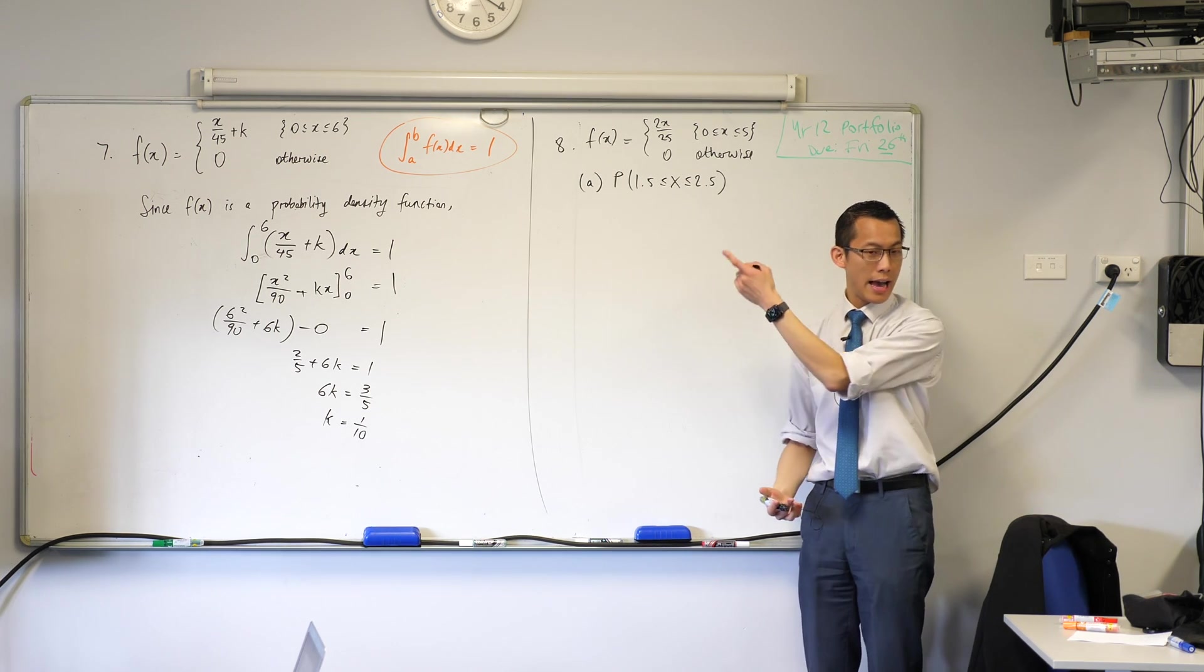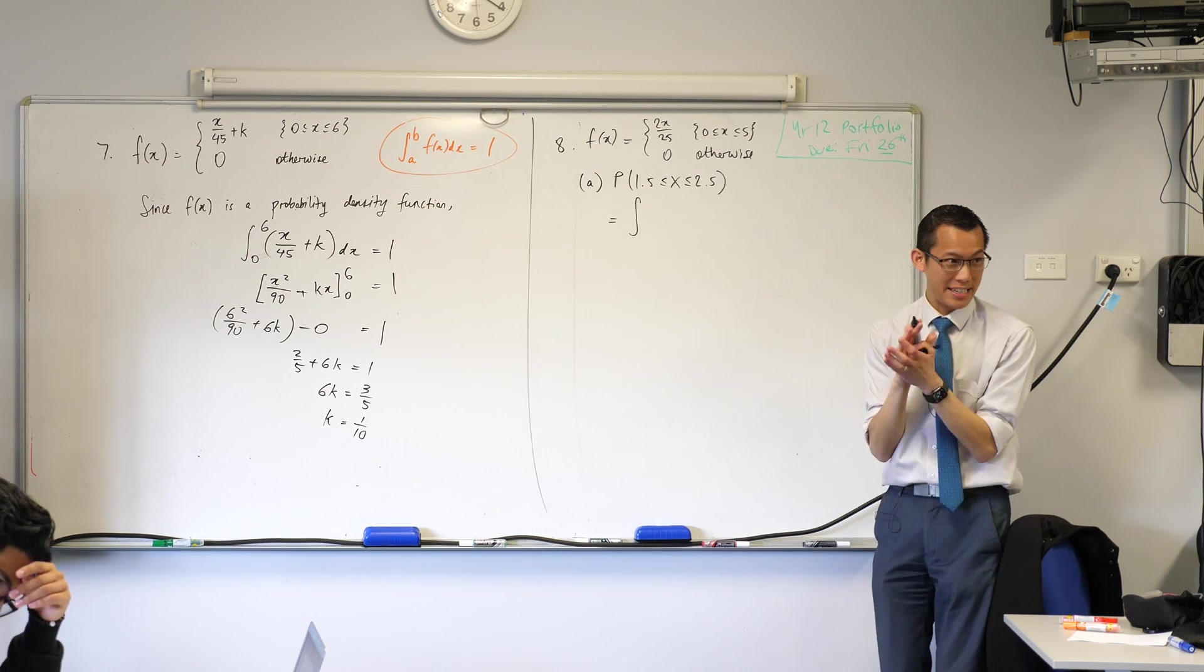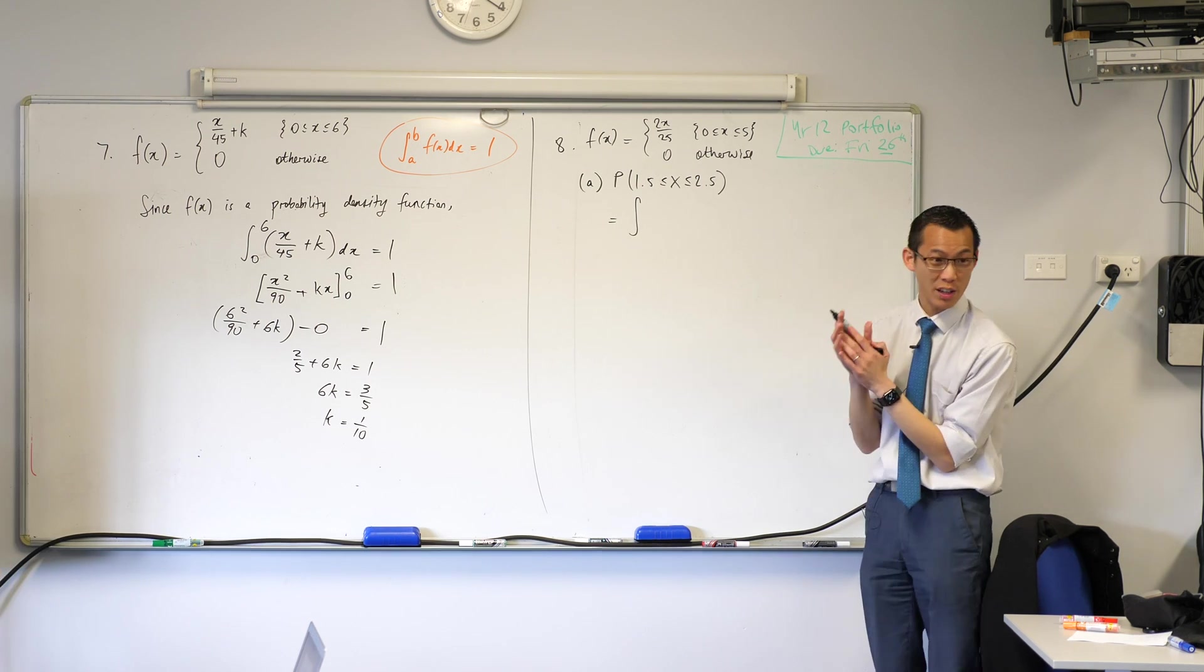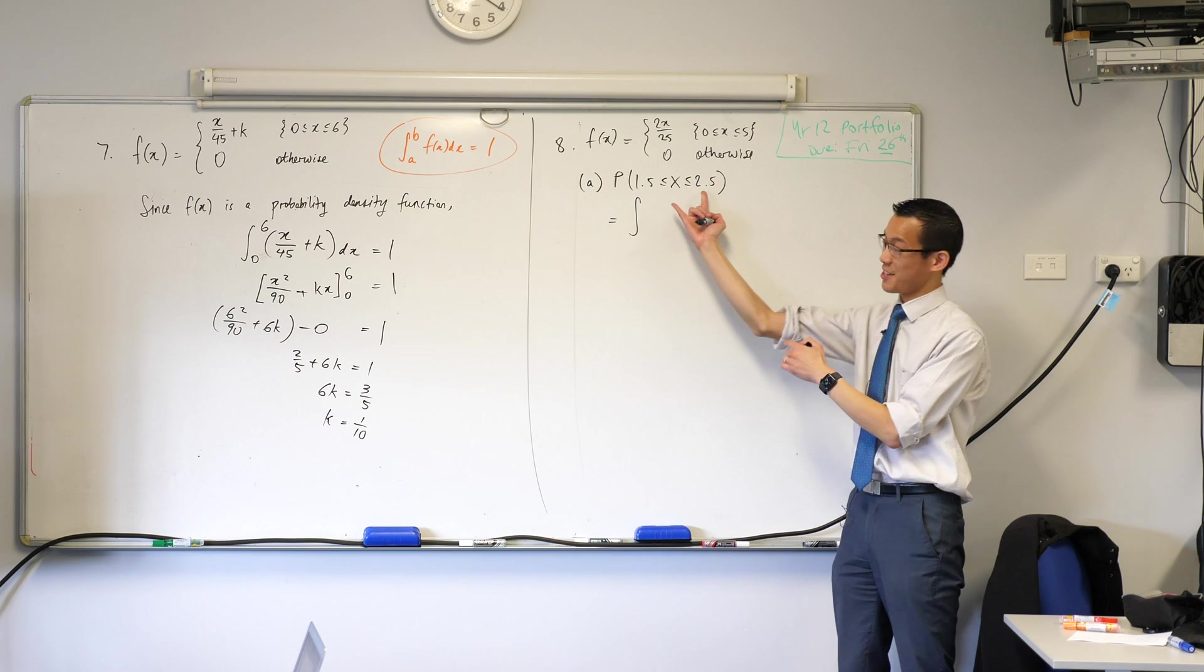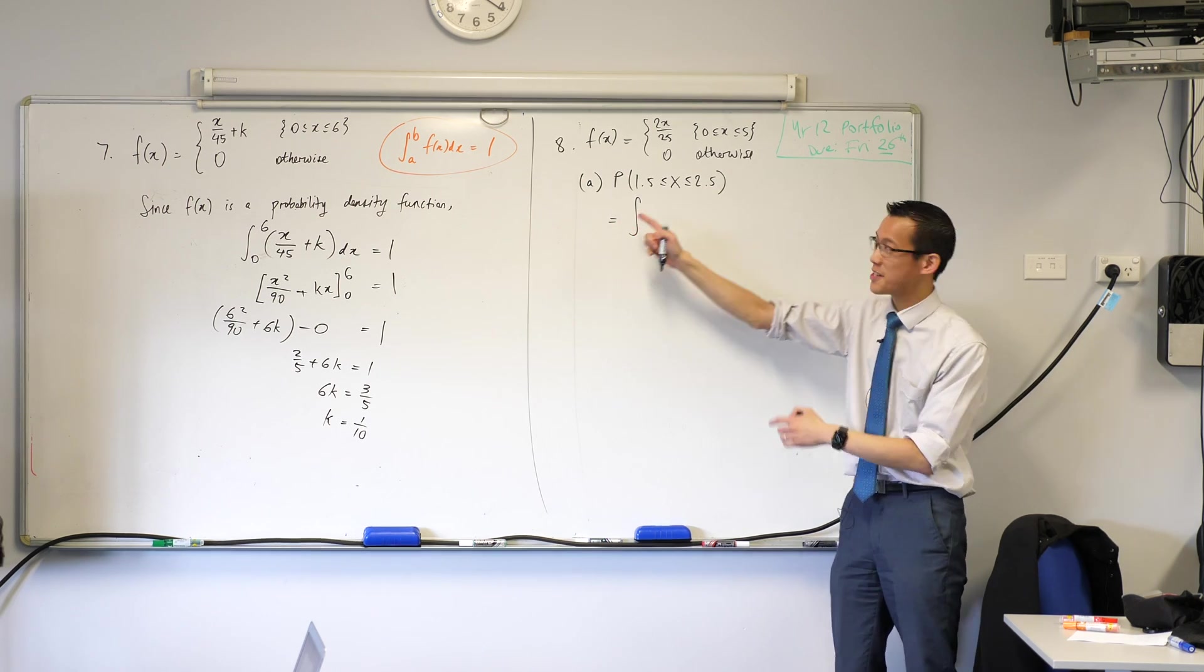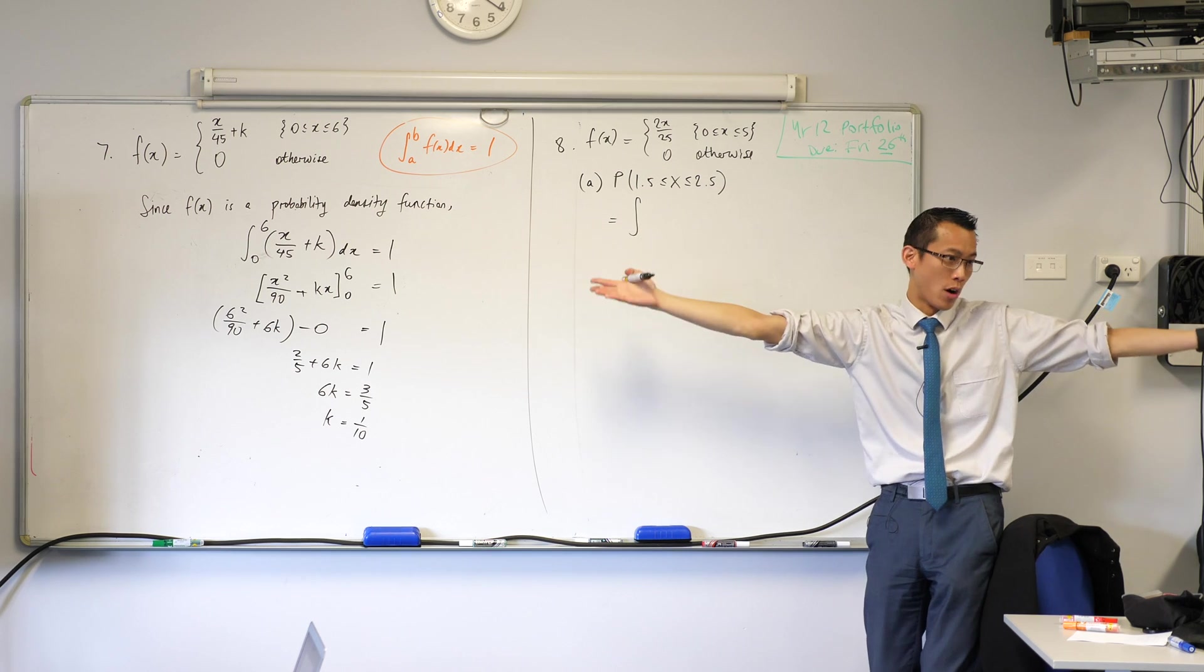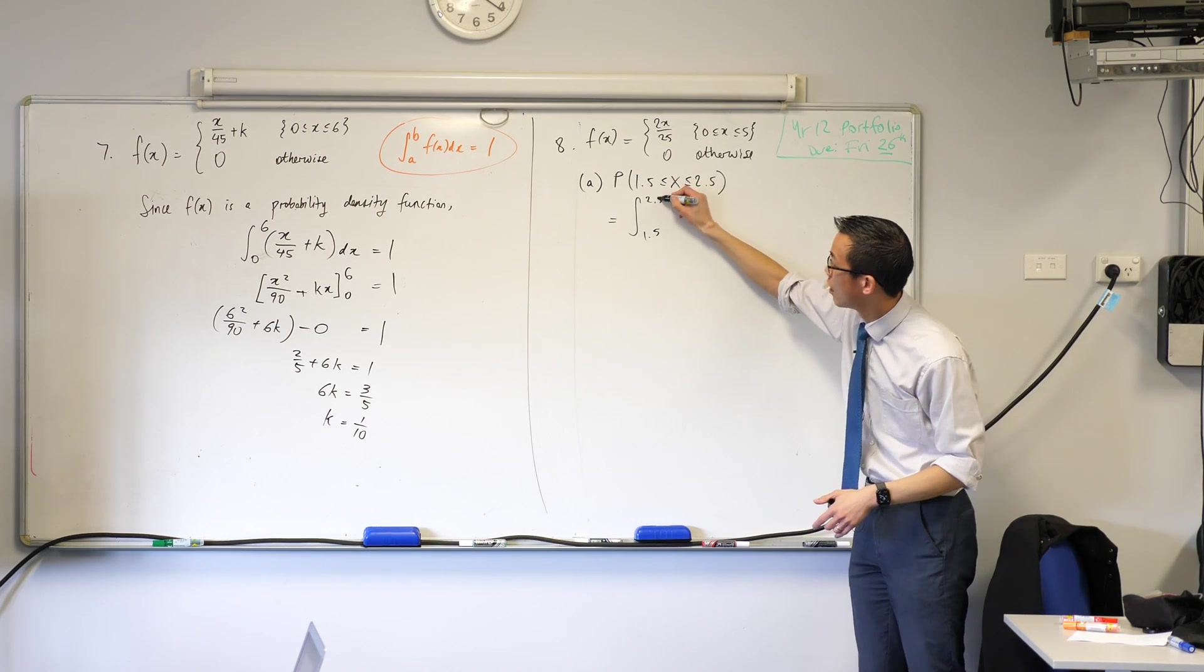Now, they want us then to work out a series of probabilities. So for this first one, our boundaries are from 1.5 to 2.5. Like so. So I can get an integral. I can interpret an integral out of this probability that they're asking for. I'm going to have my definite integral. Where do I get my boundaries from? Think, because there's a few different places I could take it from.